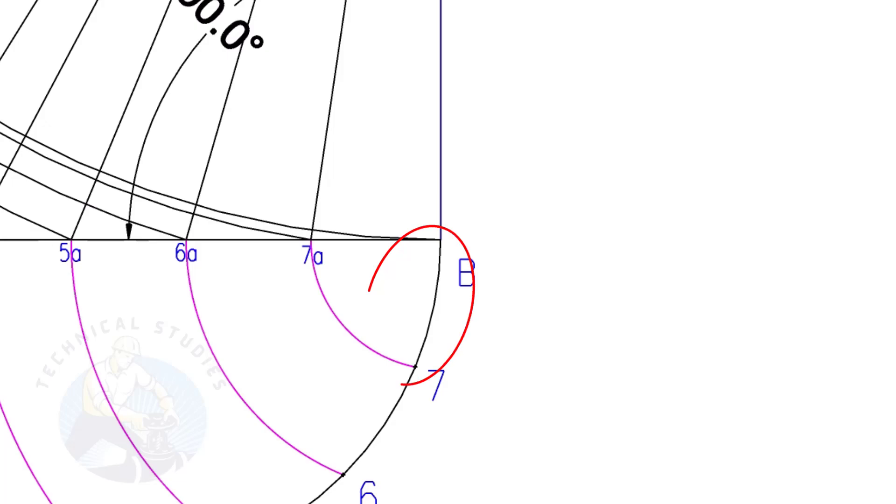To calculate the arc length of one segment, divide the circumference 2010.8 by 16. The length of one arc is 125.68mm.